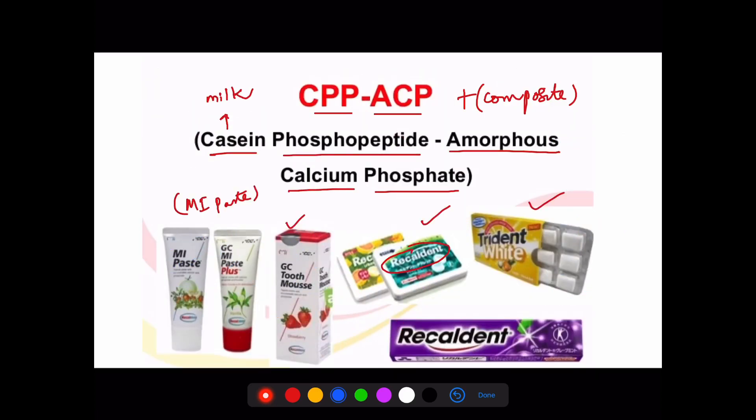You have MI paste, GC MI paste, GC tooth mousse. Tooth mousse is an important product with CPP-ACP. Sometimes they ask about MI paste plus or tooth mousse plus. Plus means added fluorides. Regular CPP-ACP is the normal thing; if you have CPP-ACP plus, you'll have extra fluorides in it. I hope you're clear about this content.